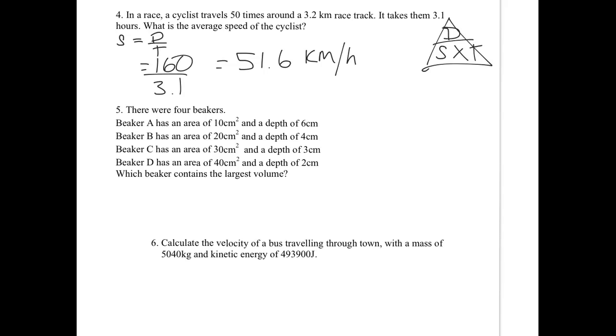Question five. There were four beakers. I'm not actually going to read that out because that will take me too long, but obviously make sure you read the question properly. Which beaker contains the largest volume? So I just need to multiply these numbers together to work out the volume. So beaker A has a volume of 60 centimeters cubed. Beaker B has a volume of 80 centimeters cubed. Beaker C has a volume of 90 centimeters cubed. And finally D has a volume of 80 centimeters cubed. So therefore, beaker C has the largest volume.